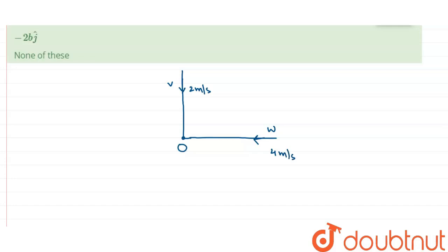At t=0, the distance of V from O is given as 100 meters and the distance of W from O is given as 200 meters. We have to calculate the shortest distance between them. Suppose this shortest distance is L — so we have to calculate the minimum value of L.